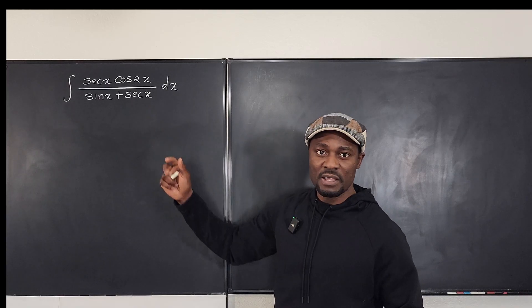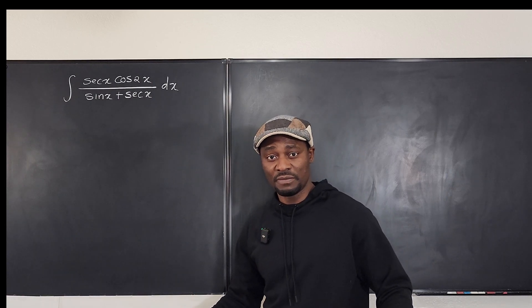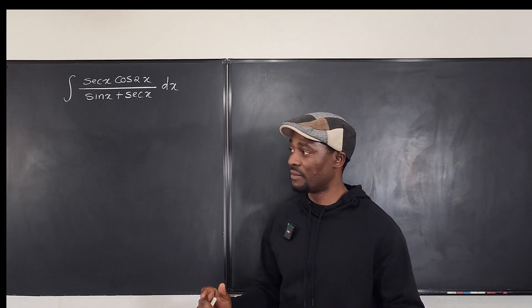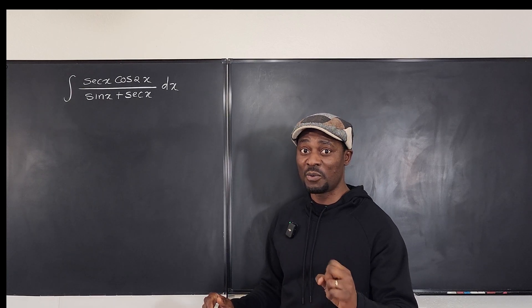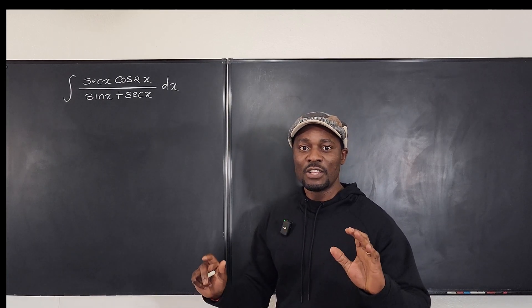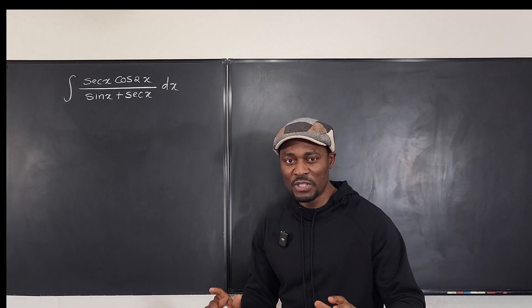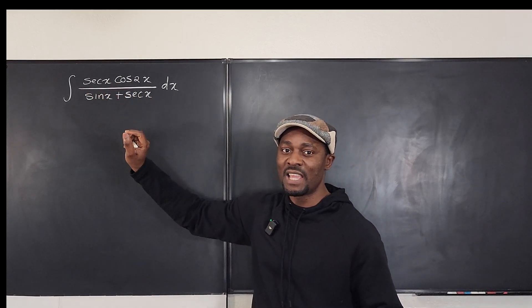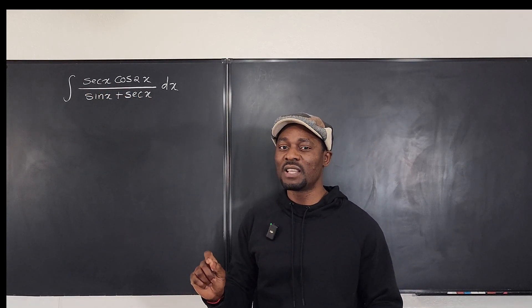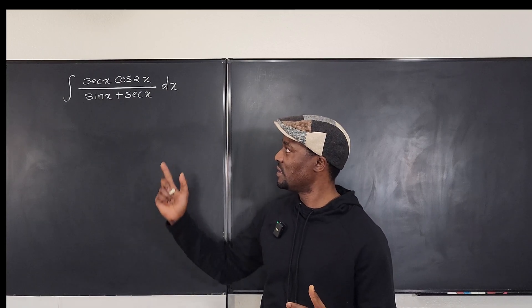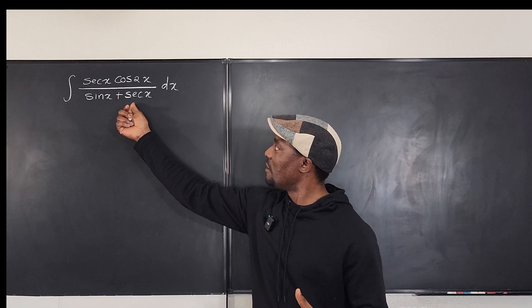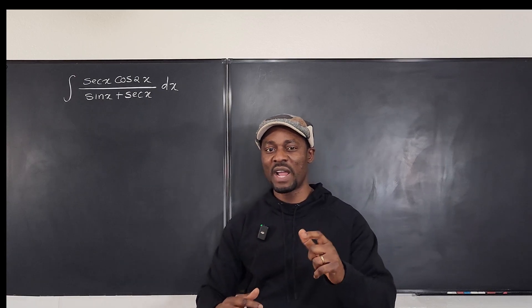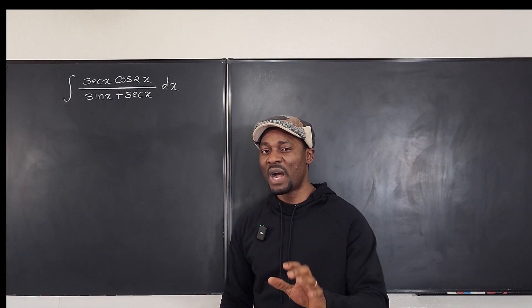This is about integrating trigonometric functions — a combination of things: we have secant, we have cosine 2θ, we have sine. The first thing you want to do when you don't know what to do is go back and ask: what is not sine and what is not cosine? As you can see, secant is here and secant is here — we want to switch it and write it in terms of cosine.